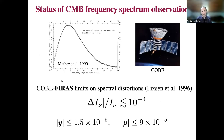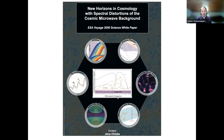Let me start with a brief review of spectral distortions. First, the status of observations. In the early 1990s, the FIRAS instrument on board COBE measured the spectrum of the CMB to very high precision and showed that the CMB is indeed a perfect blackbody within no more than about 10^{-4} deviations. These quoted numbers are either a maximum amount of a Compton-y distortion or a chemical potential distortion. This is still to date the best limit on CMB spectral distortions. There are ongoing efforts to propose more precise measurements, but as of today nothing has been funded, as far as I know.